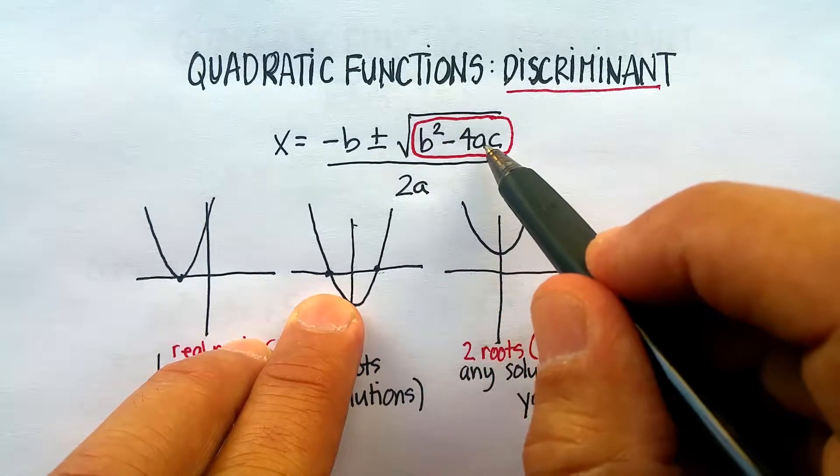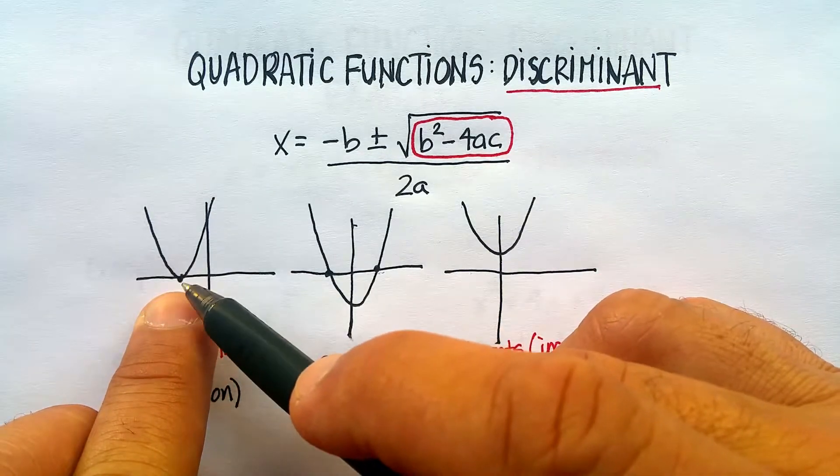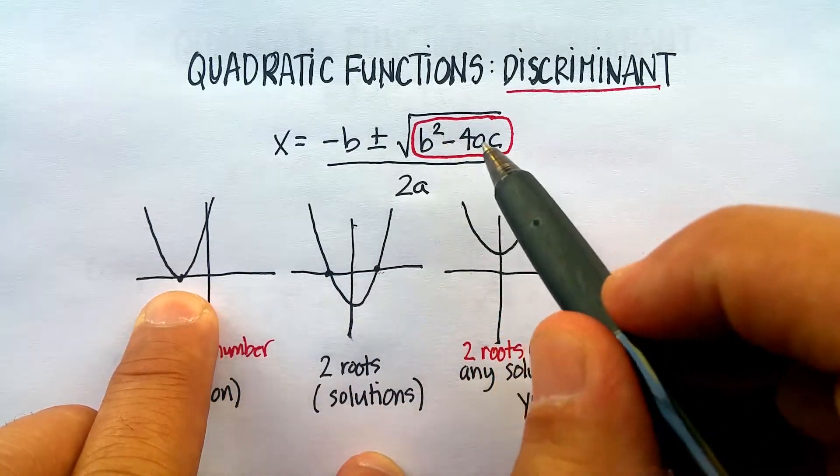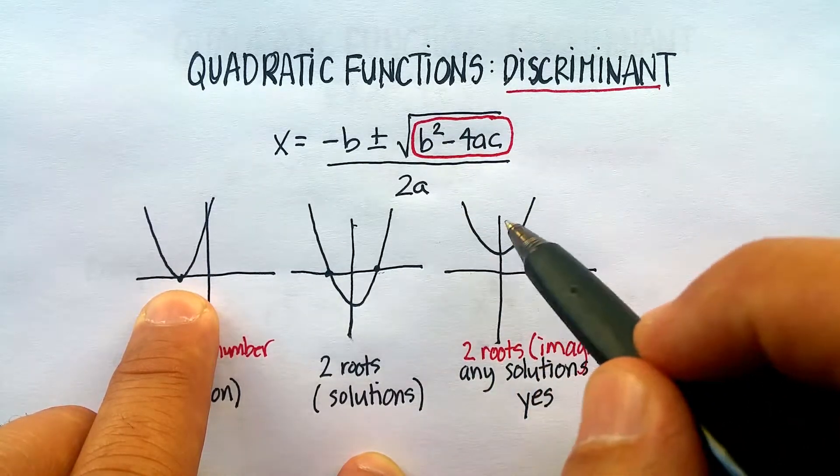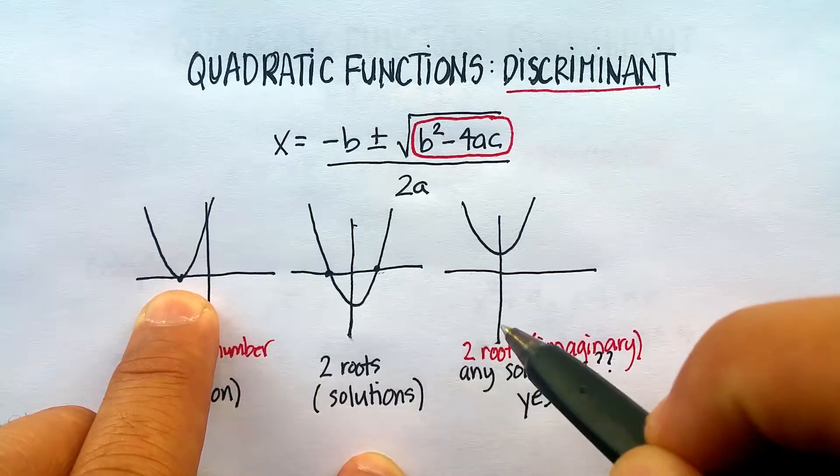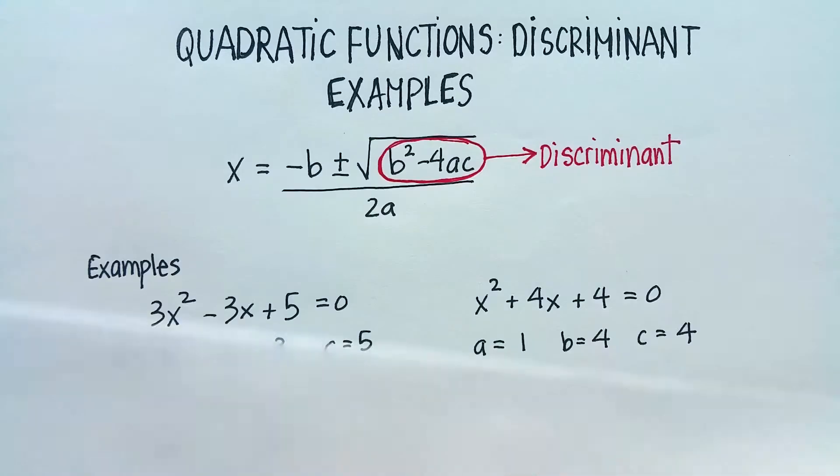If b squared minus 4ac is equal to zero, then you're going to have one real root. And if b squared minus 4ac is less than zero, or a negative number, you're going to have some kind of a parabola that will not cross the x-axis at all. So now let's look at our two examples.